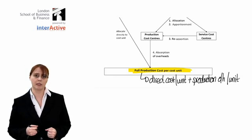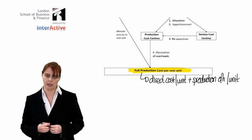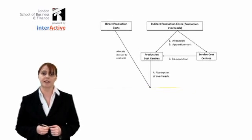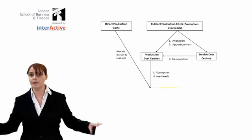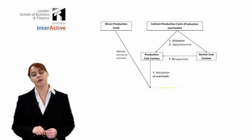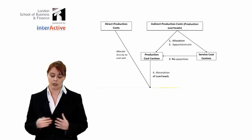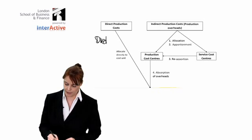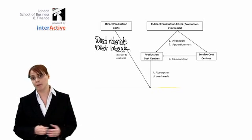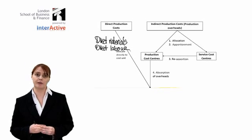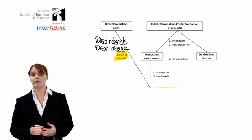Let's look at these two different components. Our direct costs are the costs we can trace directly to each unit of our output. For example, if we are a company that produces and sells tables, then our direct costs for each table would be our direct materials — perhaps the wood used to make the tables — and also our direct labor, so our production line workers' salaries, the people who actually assemble the tables. By definition, we should know how much we spend on each of these components per unit of output, so we can allocate those costs directly to the cost unit.